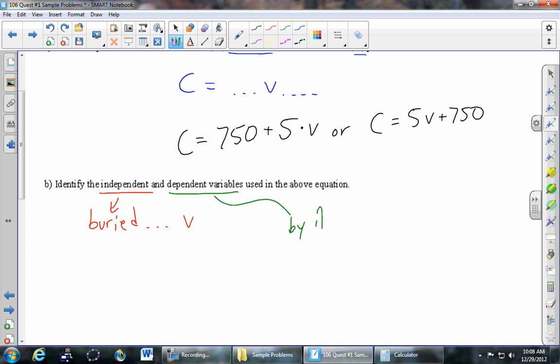is the one that's by itself. In this case, the one that's by itself is C. So independent is the number of videos V, and dependent is the cost C.